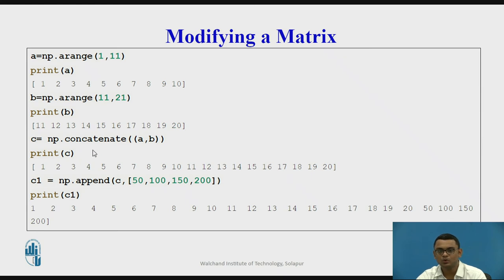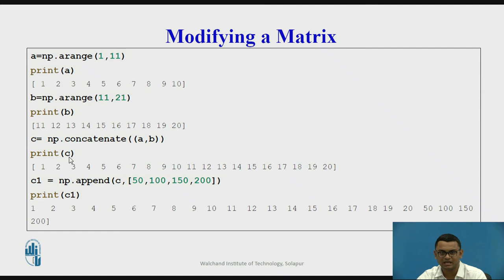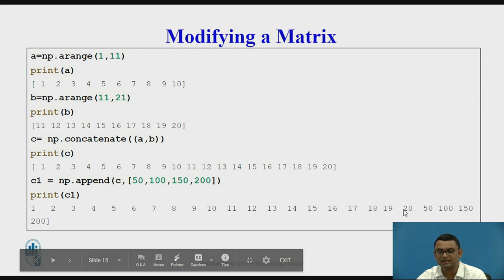Now let us look at how the concatenate function works. I am creating two arrays A and B, then calling concatenate to join the contents of A and B into C. In the output we can see that the one-dimensional contents of array A and array B have been concatenated. I also want to append the elements 50, 100, 150, and 200 to the existing array C, passing them as data to append. The output shows elements 1 to 20 from array C followed by the four appended elements.